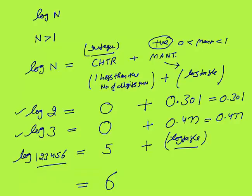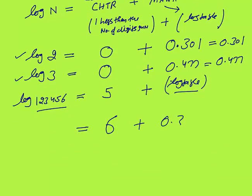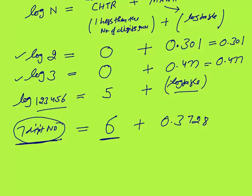A reverse question can also come. If characteristics is given as 6, with mantissa say 0.3728, how many digit number is it? It will be a 7-digit number. If characteristic is 6, the number is a 7-digit number — you can't tell which number, but it must be 7 digits. Mantissa always lies between 0 and 1; characteristic is 1 less than the number of digits.